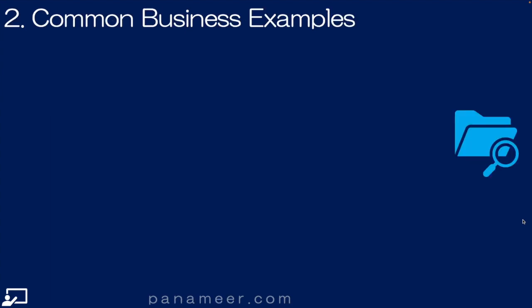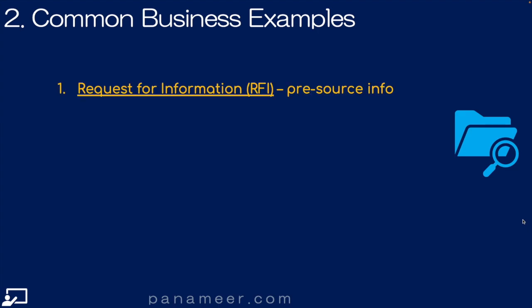Slide two: common business examples. Here are the most common types of negotiation, also known as sourcing events in procurement. Request for information — this is pre-source; I need to get some details in order to understand how or if to set up a sourcing event. Request for quote — this is simply how much.